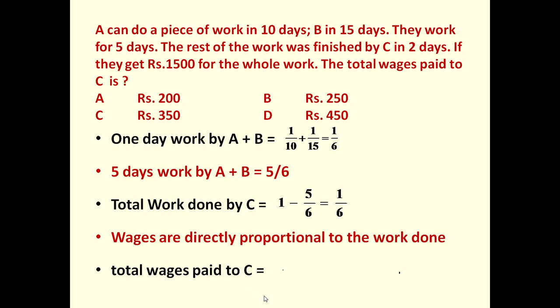So total wages paid to C is 1 by 6 into 1500, because total work done by C is only 1 sixth of the work, so he will get 1 sixth share. This equals 1 by 6 into 1500, which is 250. So answer is B, rupees 250.